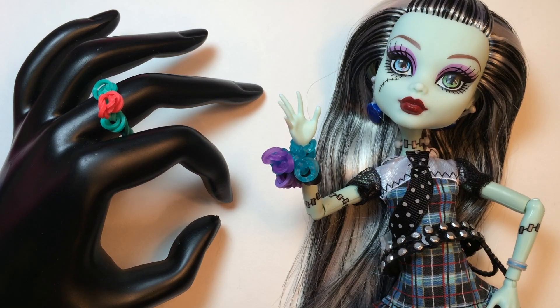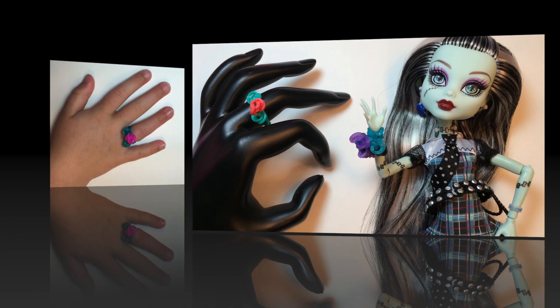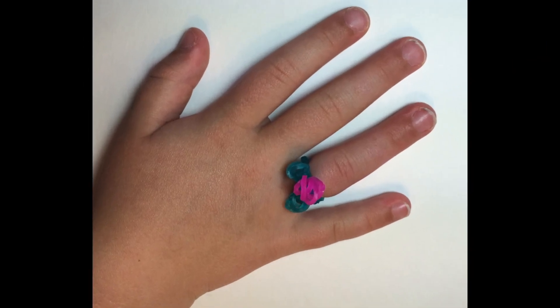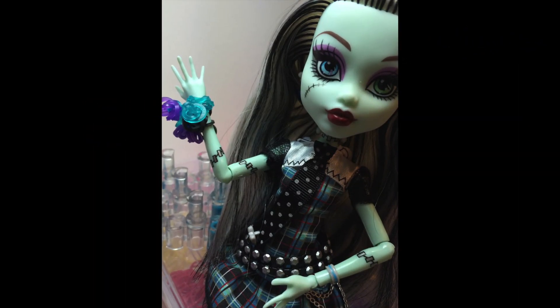Hi, this is Kim from Made by Mommy, and today I'm going to teach you how to take eight loom bands to make either a really adorable flower ring to wear, or you can combine two of these flower rings to make a great corsage for your dolls, like Frankie's wearing.